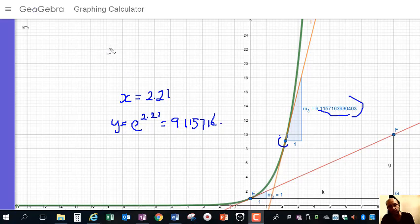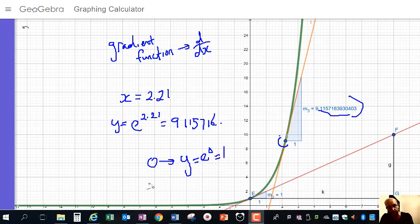So remember, the gradient, if we plotted all those gradients, we'd have the gradient function, which is the derivative. And so that's demonstrating with a couple of cases that the gradient function, or the derivative of the function equals the value of the function at those corresponding points for x. When x was equal to 0, we had y equal to 1, y equals e to the 0, which equals 1. And when we had a completely different number, 2.21, y was e to the 2.21, which was that 9.1157, et cetera, and the gradient also equals that as well.